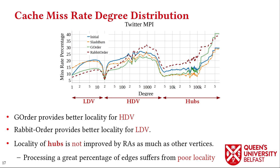For low-degree vertices on the left of the x-axis, Rabbit Order has the lowest miss rate. But for high-degree vertices, it is GOrder that provides better locality. For hubs with the highest degrees, reordering algorithms cannot provide better locality, and processing a large portion of edges of the graph suffers from poor locality even after relabeling.